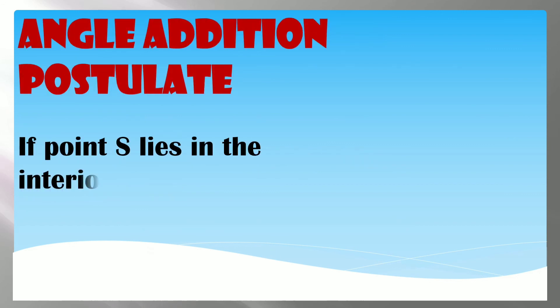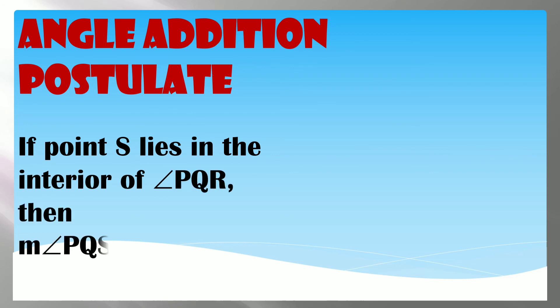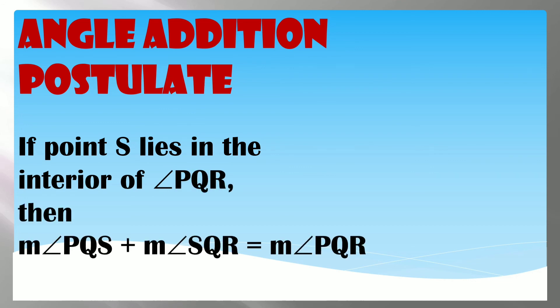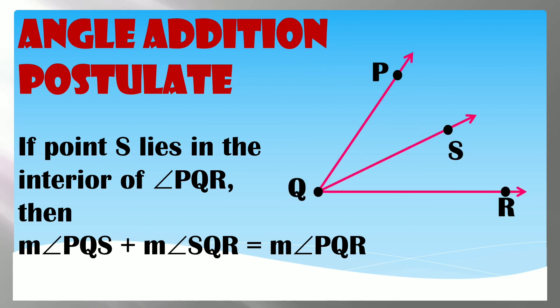The Angle Addition Postulate states: if point S lies in the interior of Angle PQR, then the measure of Angle PQS plus the measure of Angle SQR equals the measure of Angle PQR. So to get the full measure of Angle PQR, we just add Angle PQS and Angle SQR.